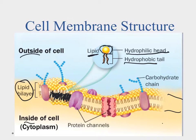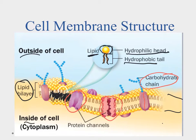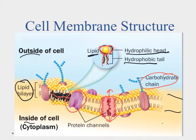However, there are other molecules here — protein channels — and those allow molecules to go through. Whether it's a carbohydrate chain or water traveling in and out of the cell, that's what allows it. The double-layer structure allows the hydrophilic side to attach to water so it's not forced through, while the hydrophobic side provides a barrier so water can't flow in and out freely.